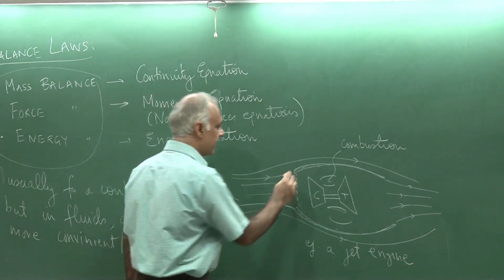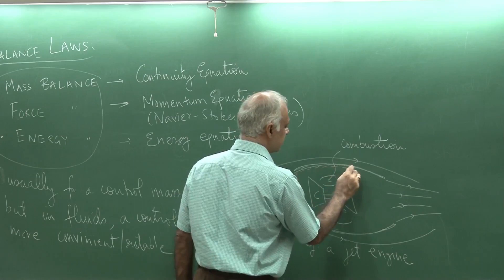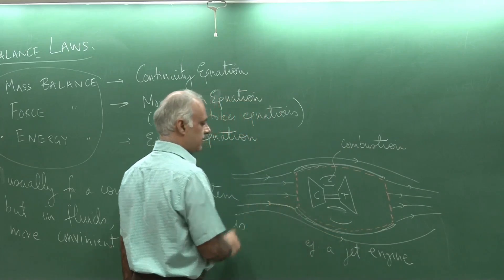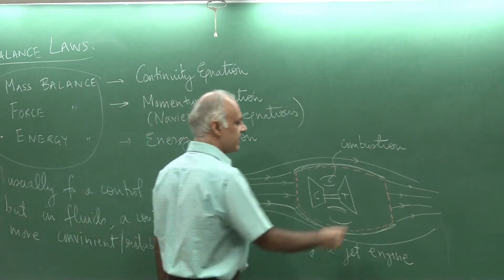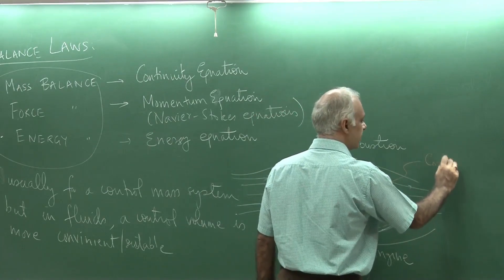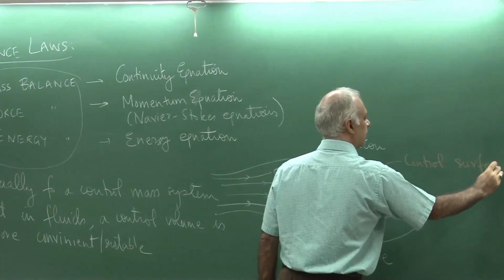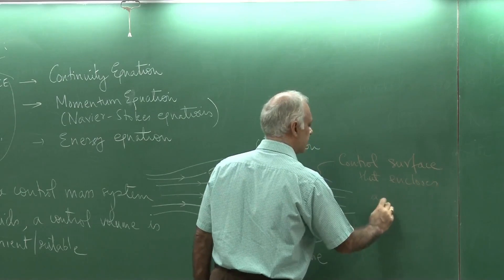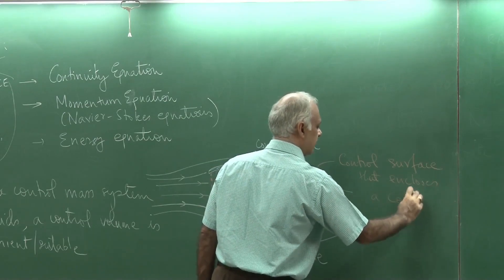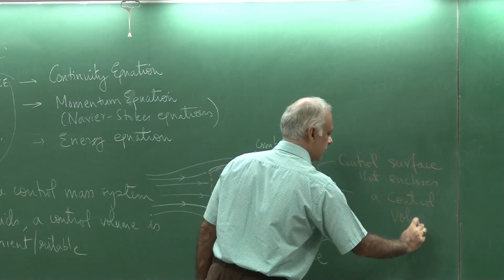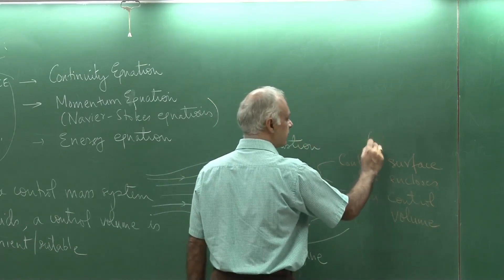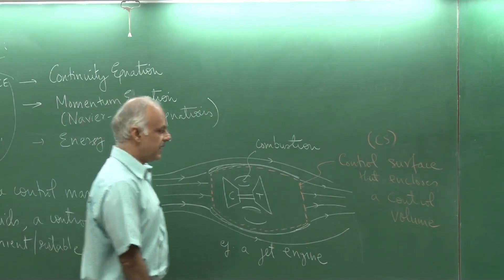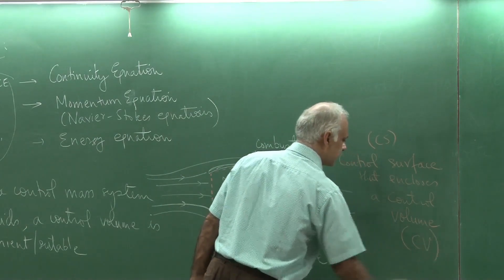I actually do my analysis on a region like this. This here is the control surface that encloses a control volume. We are going to use some abbreviations. Control surface, I would usually refer to it as CS and a control volume, I would refer to it as CV.